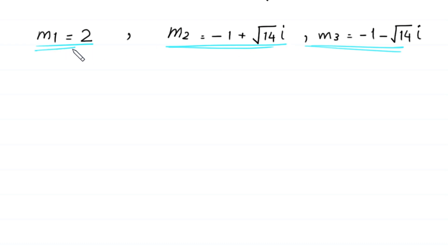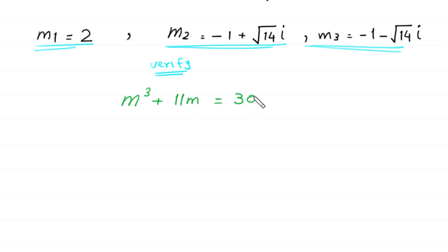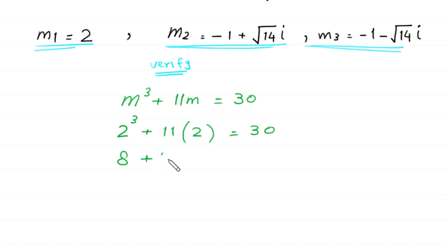These are the three solutions: two complex solutions and m₁ equals 2 as a real number. Let's verify m₁ equals 2 in the original equation m cubed plus 11 times m equals 30. Substituting m equals 2: 2 cubed plus 11 times 2 equals 8 plus 22 equals 30. The left-hand side equals the right-hand side, so m equals 2 is a valid solution.